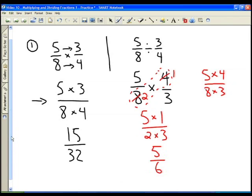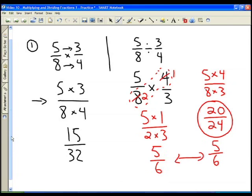And again, doing it this way, we would have had 5 times 4, which is 20, and 8 times 3, which is 24. So we would have had 20 divided by 24, but then we realize that 4 goes into both of these numbers. And 20 divided by 4 is 5, and 24 divided by 4 is 6. And these answers are equivalent.